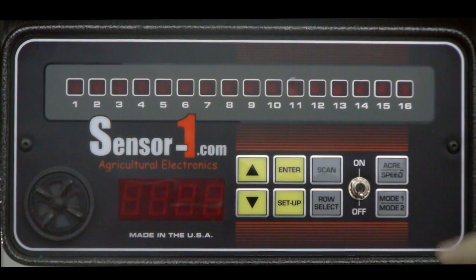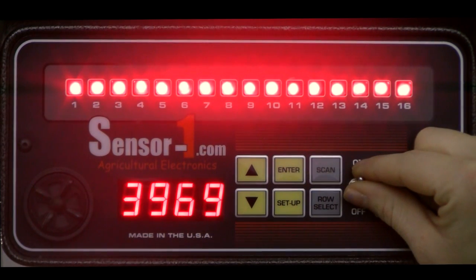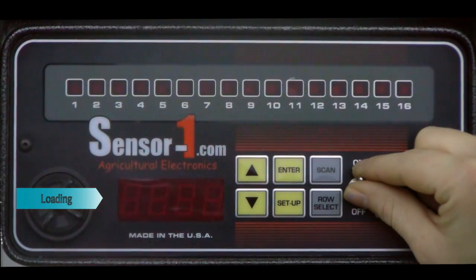When you turn on the monitor, you will see two numbers flash. The first number is the program version and the second number is the serial number. The enter button will be the most important button throughout the setup process for this monitor. You cannot save or proceed to the next step without pressing enter.